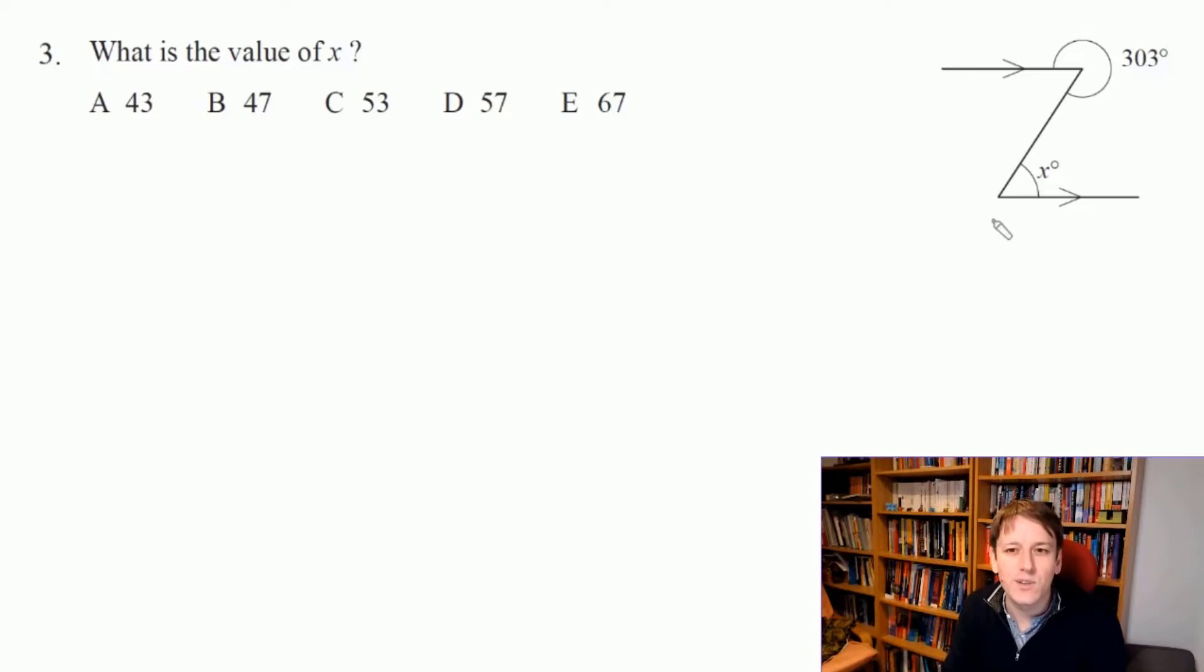We've got alternate angles here, sometimes called Z angles because of the sort of Z shape that they make. So you need to know that these alternate angles are equal and also that the angles in a circle add up to 360 degrees. So the x here is just going to be 360 minus 303, which is 57, and then this x is also going to be the same, so that's also 57 and the answer is D.